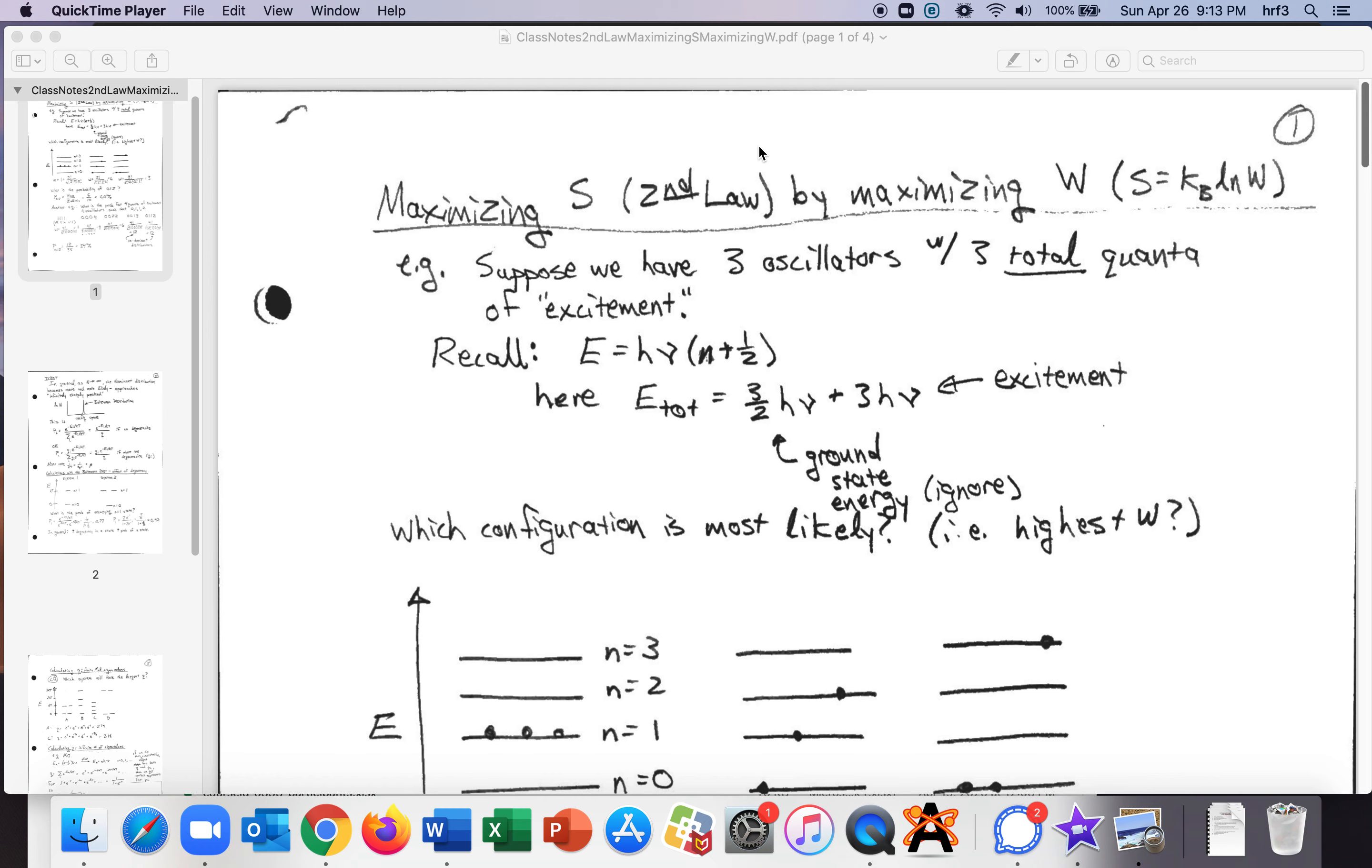Okay, let's talk about the second law of thermodynamics and maximizing the entropy by maximizing the W. So as you know from thermodynamics, second law states that for any spontaneous change, well really for any change, the entropy of the universe has to increase. So where does that come from? And ultimately it comes from quantum mechanics through statistical mechanics using just ideas from probability.